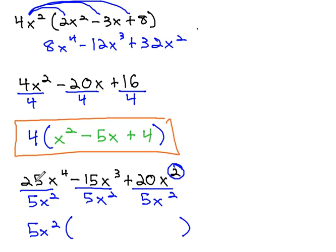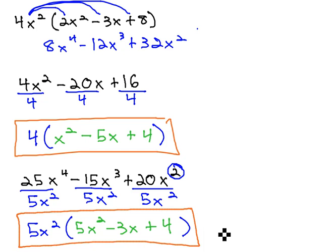Dividing the 5x² out of 25x⁴, we get 5x². Minus 15 divided by 5 is 3, x³ over x² is x, plus 20 over 5 is 4, and the x² divide out. We now have our factored solution.